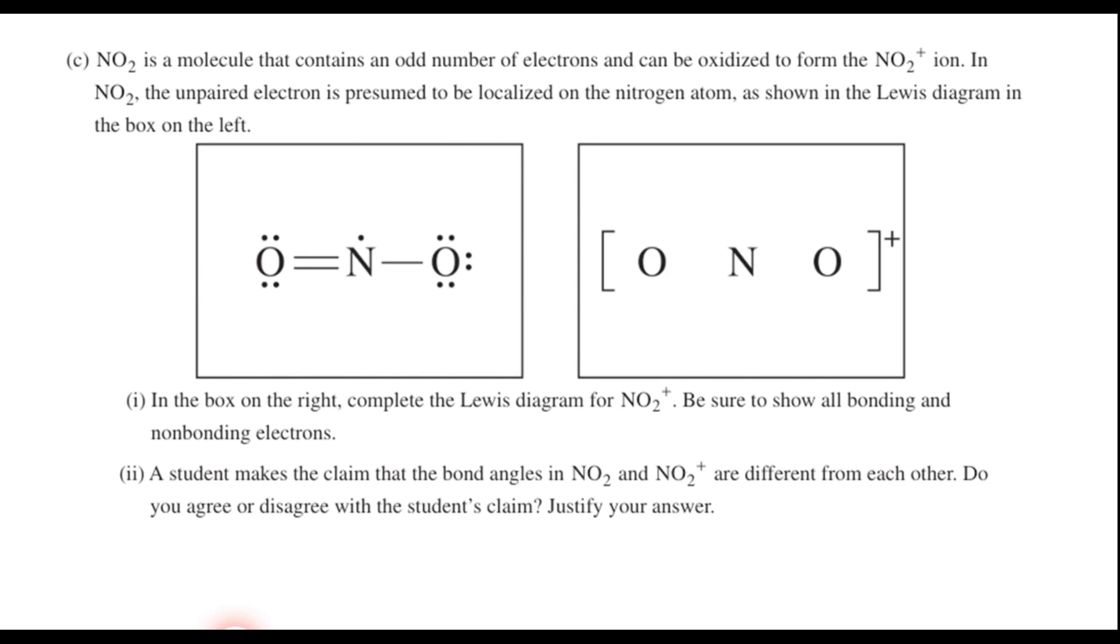So part C, we have a molecule, actually two molecules here. It says NO2 is a molecule that contains an odd number of electrons and can be oxidized to form the NO2 positive ion. In NO2, the unpaired electron is presumed to be localized on the nitrogen atom, like we see right here, as shown in this Lewis diagram. In the box on the right, complete the Lewis diagram for NO2 positive. Be sure to show all bonding and non-bonding electrons.